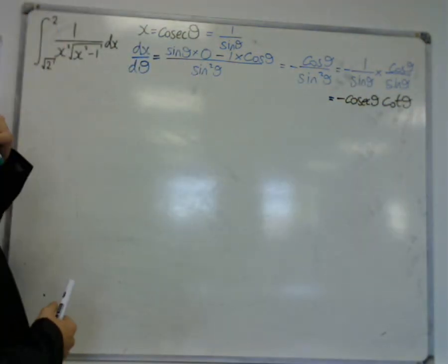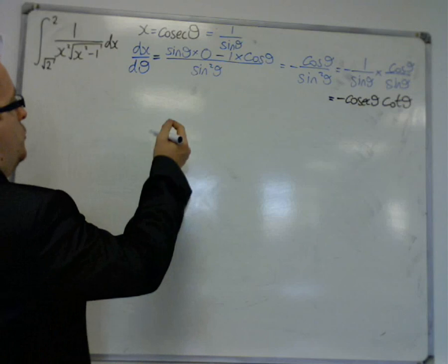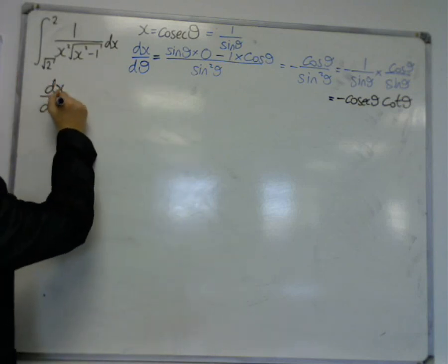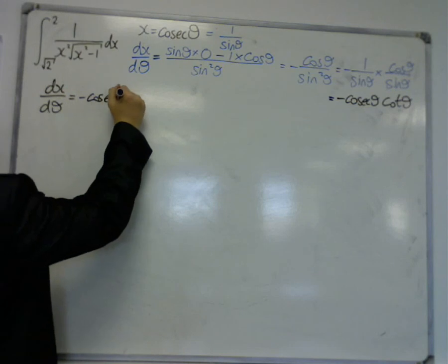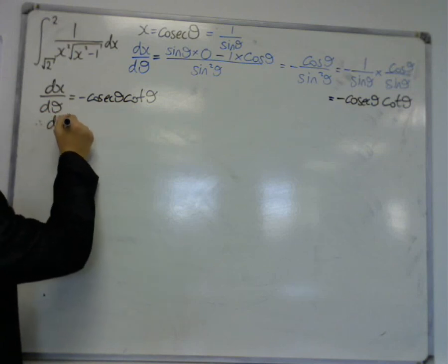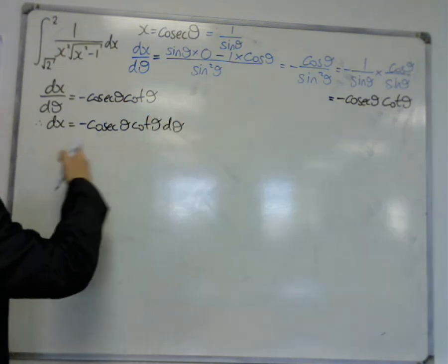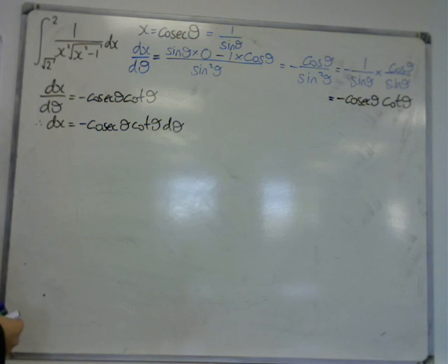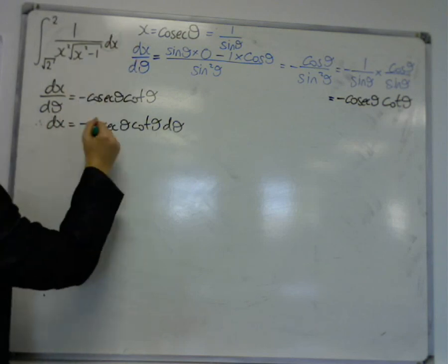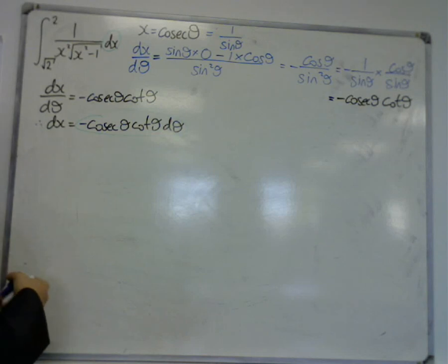So we've got a replacement. Well, we haven't got a replacement for dx quite yet, okay? I've still got to, with dx by d theta being this, you can multiply both sides by the d theta. And I now have a replacement for dx, okay? So this can be replaced with this. Now, I'd best have a look at also changing the limits, okay? So we're going to have to change the limits.